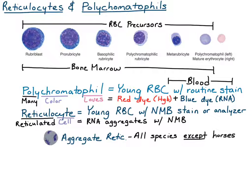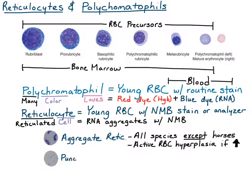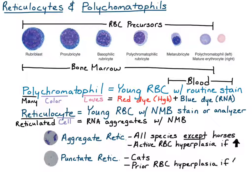Horses do not release reticulocytes from the bone marrow. If reticulocytes are increased, that means there is active red blood cell hyperplasia, or active erythroid hyperplasia, in the bone marrow. Cats have a second type of reticulocyte called the punctate reticulocyte, where you can see little dots of blue reticulum. If these are increased, it means the cat has had previous erythroid hyperplasia within the past one to two weeks. If you just see the term 'reticulocyte' on a CBC report without differentiation, you can assume it refers to the aggregate reticulocytes.